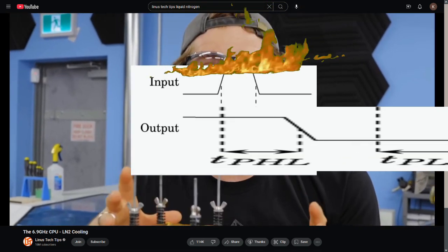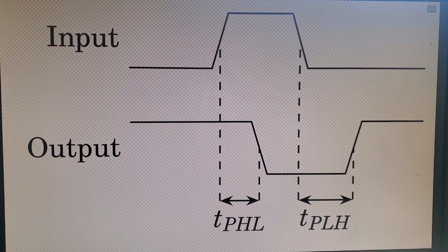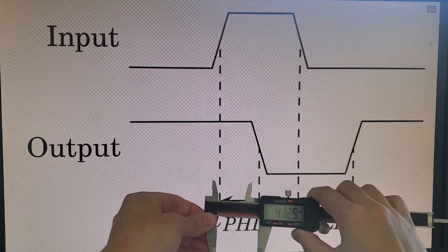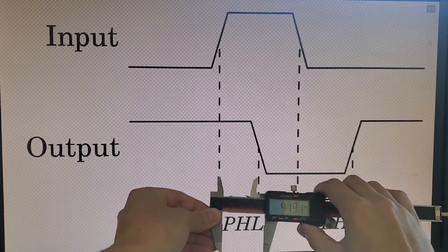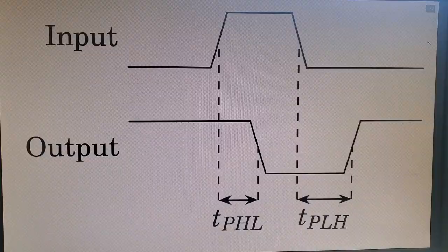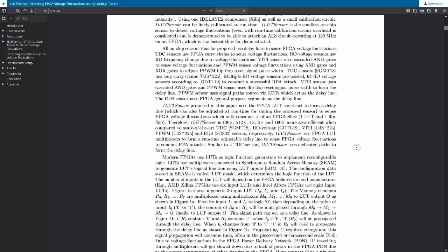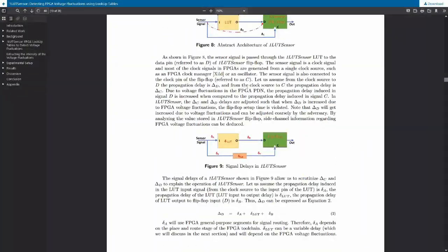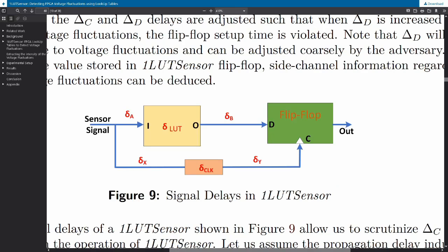Therefore, if we can build a sensor to measure propagation delay, we can see when the laser hits the chip based on the increase in propagation delay. In fact, such a sensor exists. It was originally made for something else, which is a bit much to explain in this video.